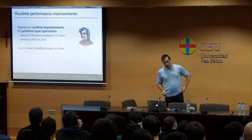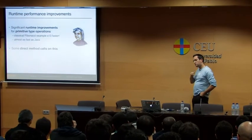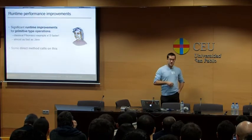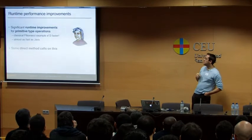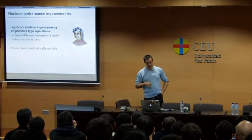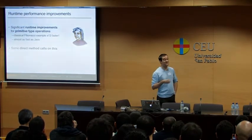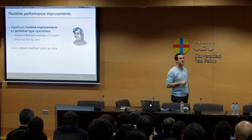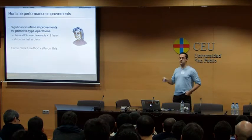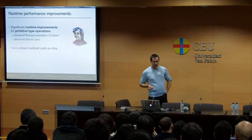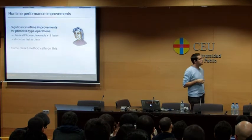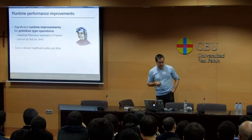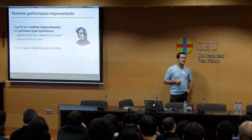A very powerful new feature for domain-specific languages. We also worked on runtime performance improvements in the area of primitive type operations. For our micro-benchmarks we use the Fibonacci example, which historically has been the worst for Groovy performance — we could be as much as 13 times slower than Java due to boxing and unboxing instead of JVM primitive instructions. Now Fibonacci should be perhaps 50% slower than Java, not more.